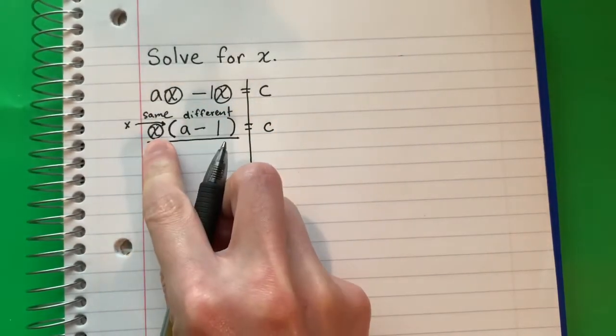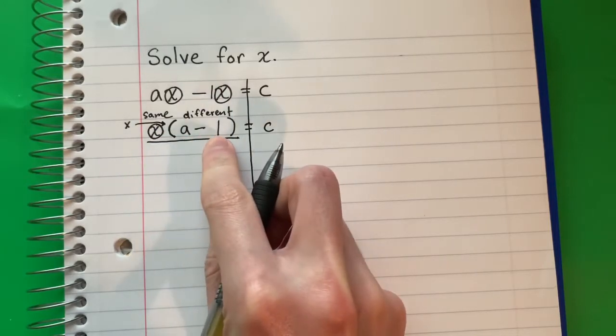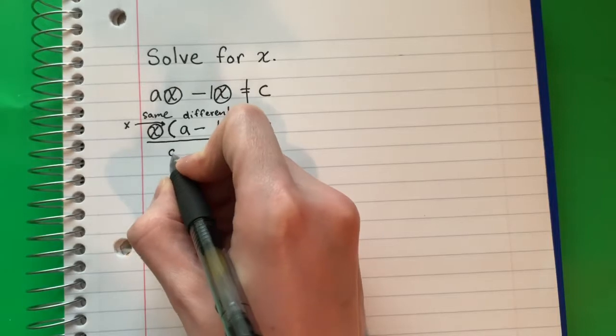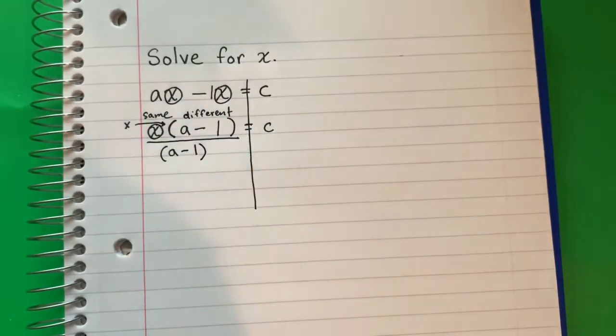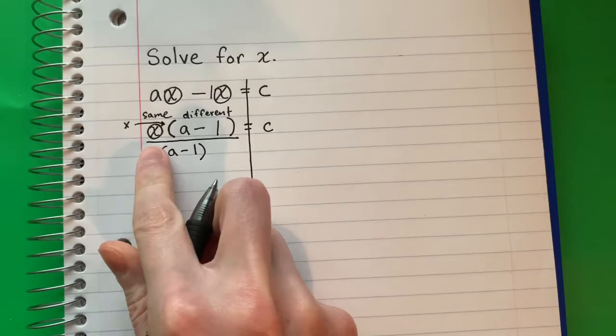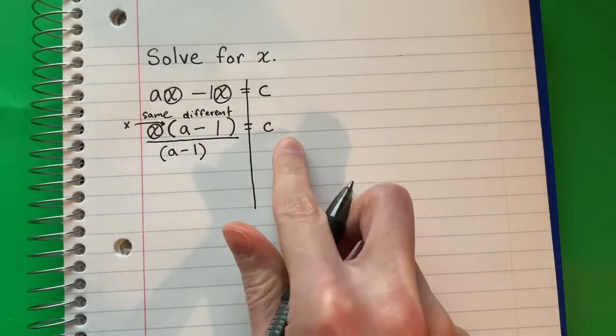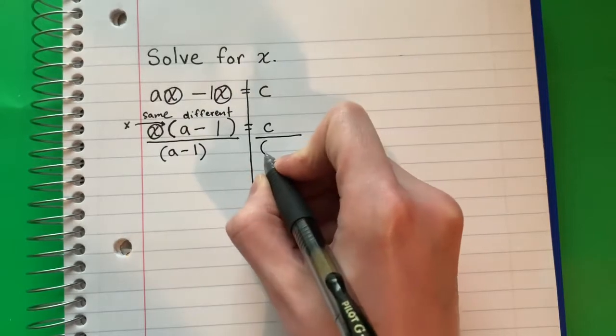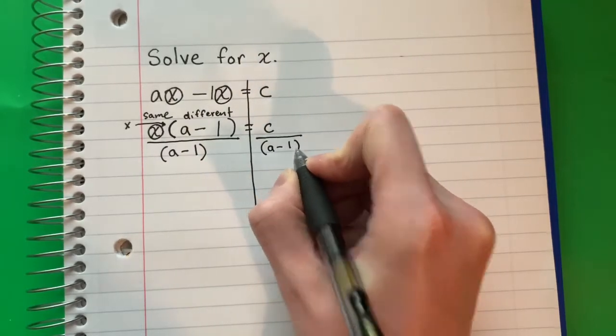This is X times A minus 1. I'm going to copy this A minus 1, keeping the parentheses for now. Remember, whenever you do an opposite, you need to copy to the other side. So I'm going to divide by A minus 1 on both sides.